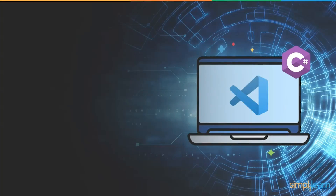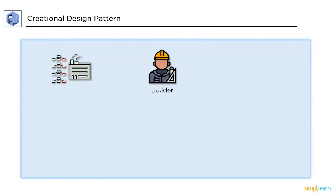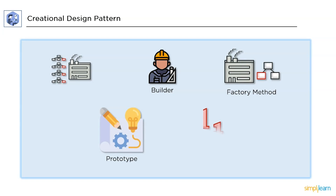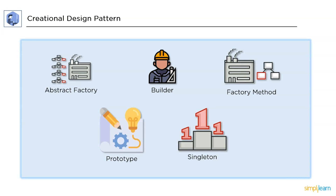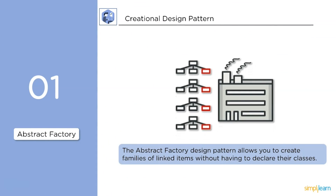Let's start with the creational design pattern. Creational design patterns deal with object creation and initialization, giving the programmer more flexibility in deciding which objects need to be created for a given case. We have five types: abstract factory, builder, factory method, prototype, and singleton.